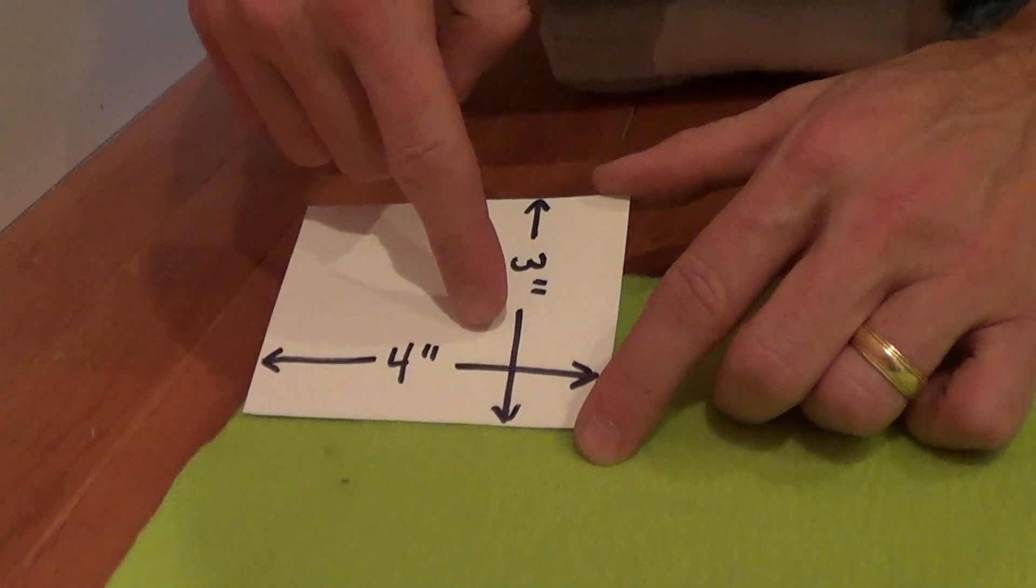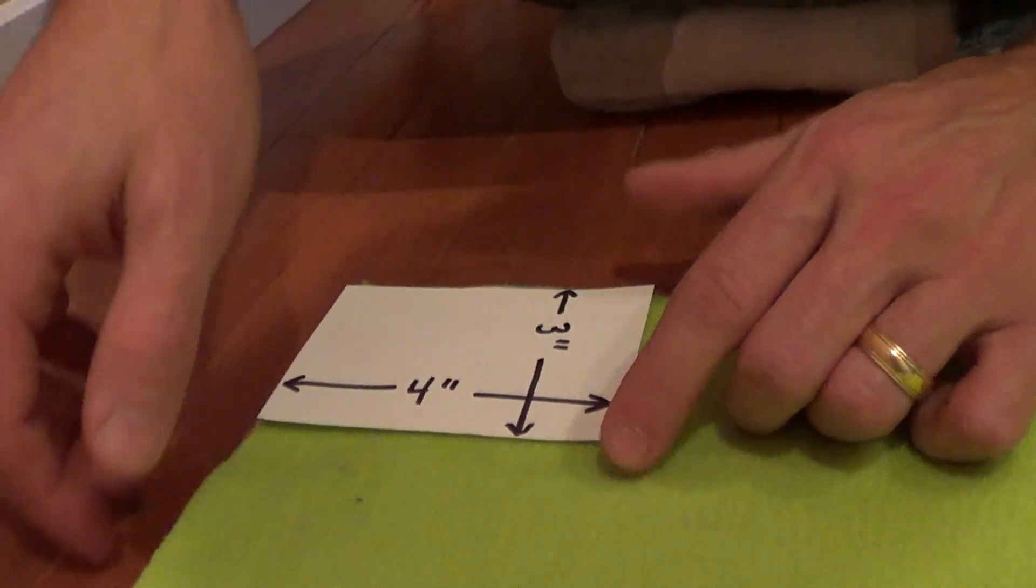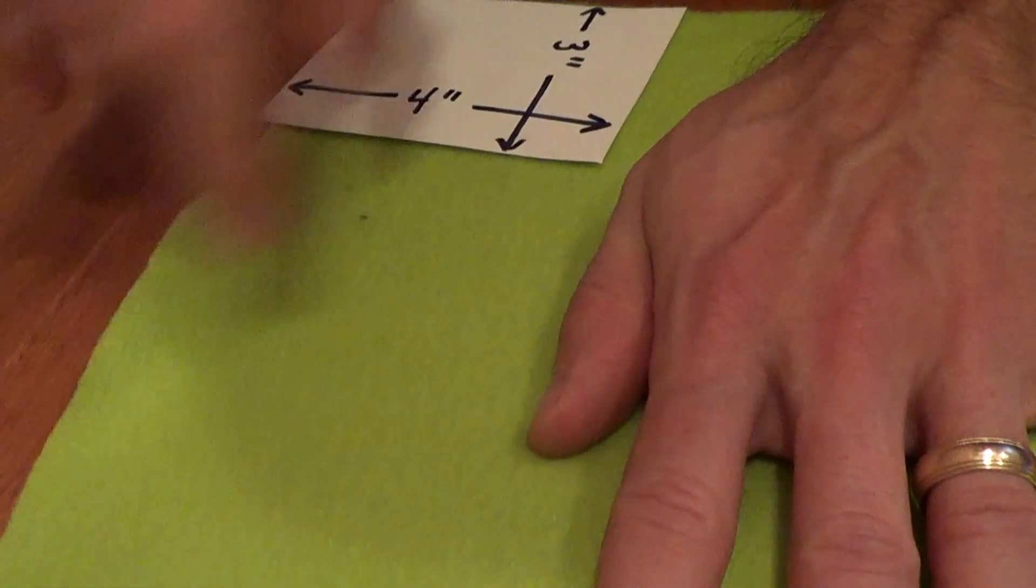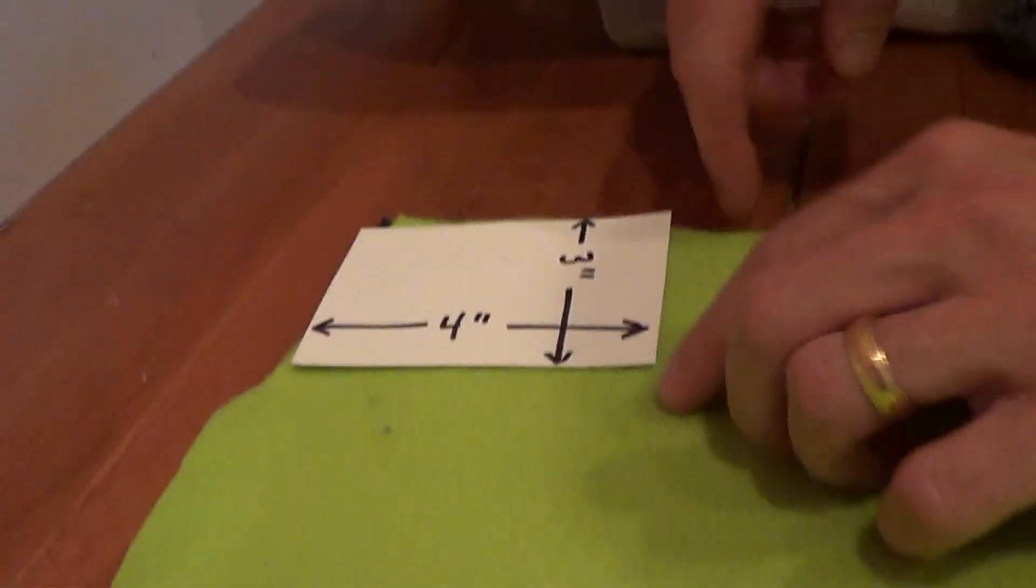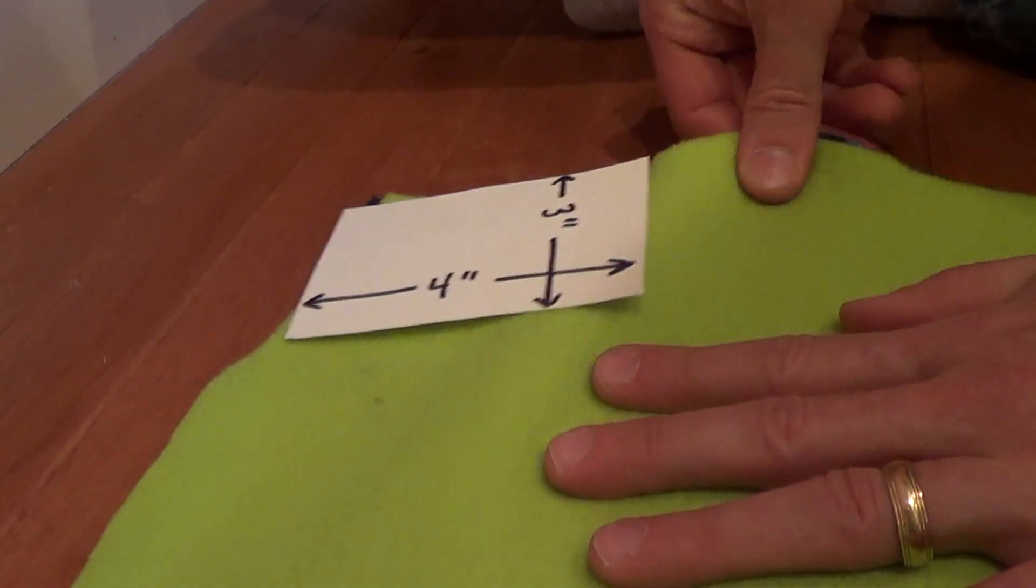Now the reason we're going to go four inches this way and three inches this way is that fleece doesn't stretch one direction, so that's going to be the longer direction, and then this direction of three inches it does stretch.